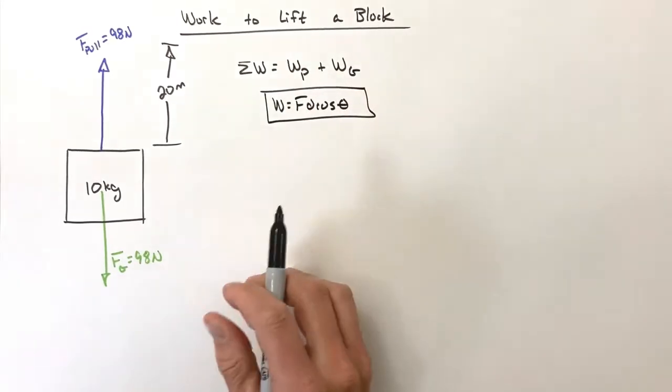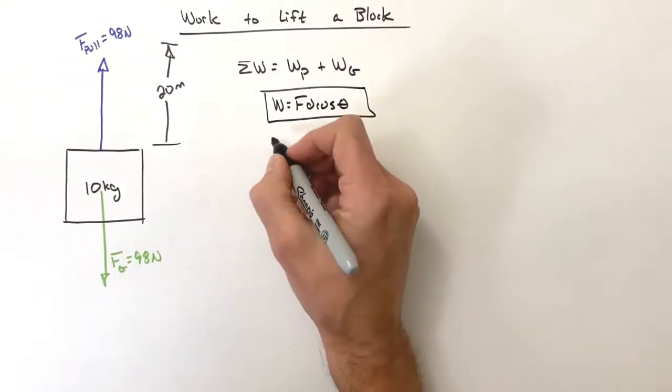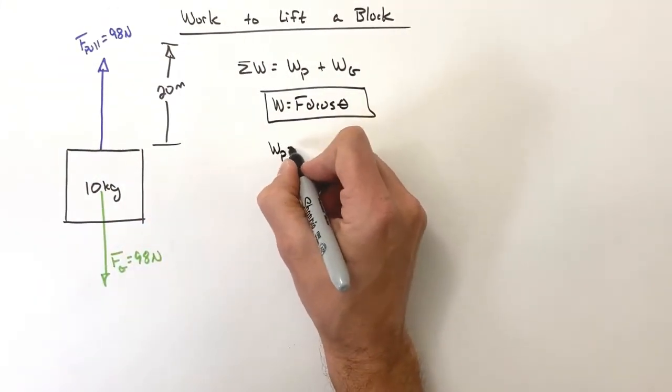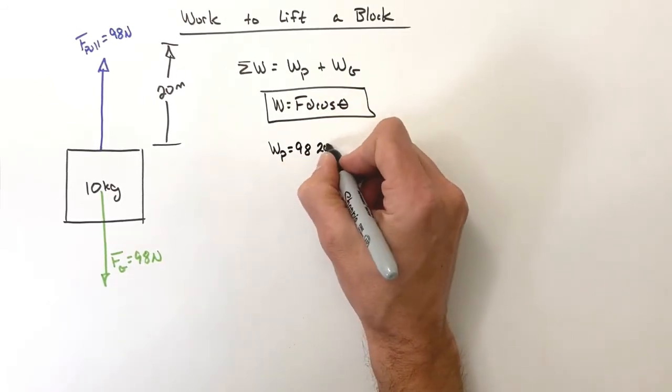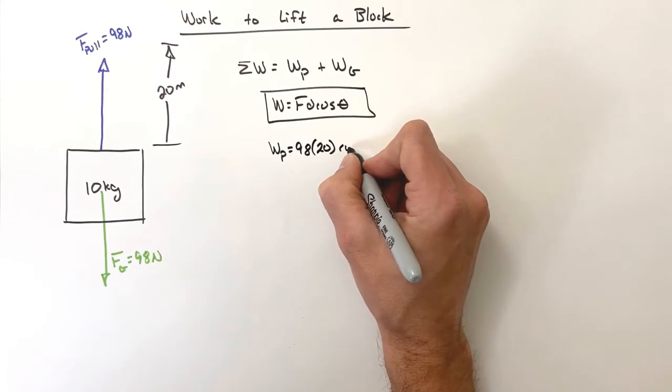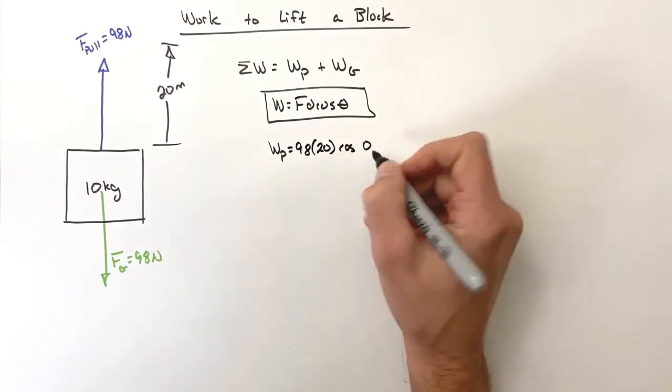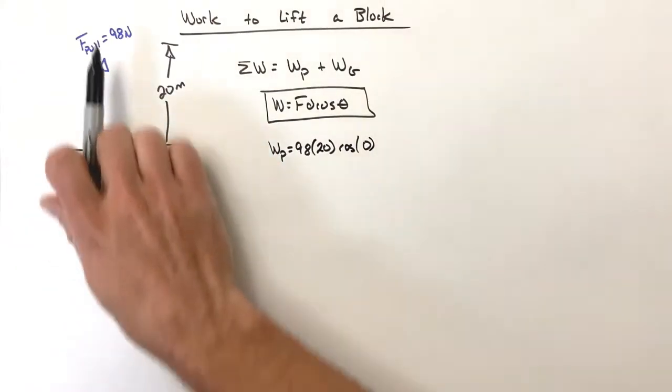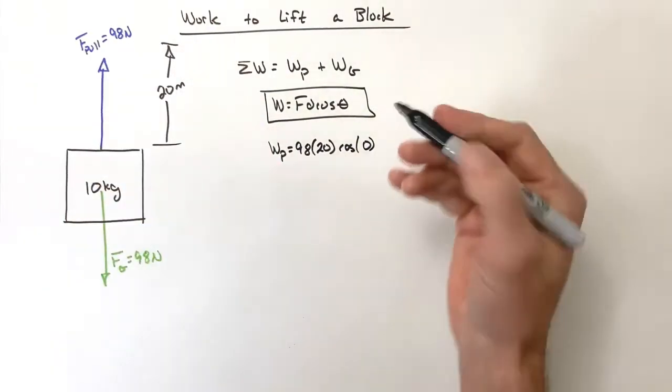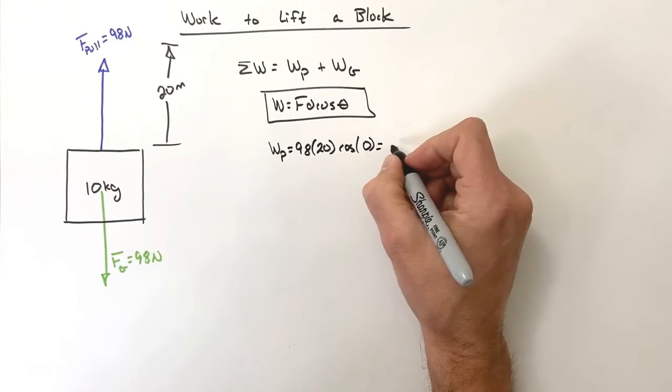So we're going to apply this equation to each of these forces. First, we have the pull force. The work by the pull force is going to be 98 times 20 times the cosine of zero. The angle is zero because the force is straight upward and the displacement is straight upward.